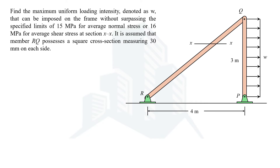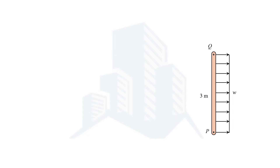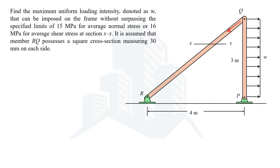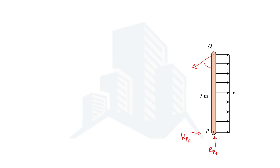Since the uniform loading intensity W is acting on the PQ member, let's consider this PQ member and draw a free body diagram. This PQ member is supported by a pin support at point P, giving two reactions: RPV as the vertical reaction and RPH. At point Q there is a pin support, and the reaction will be in the direction of member QR. Using this right angle triangle, we can calculate the angle using tan theta — the angle comes out to be 53.13 degrees.